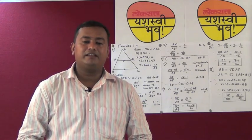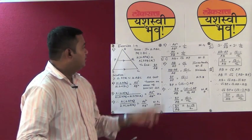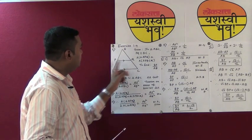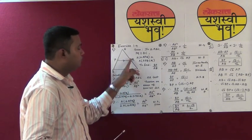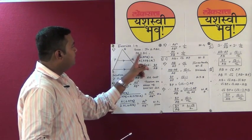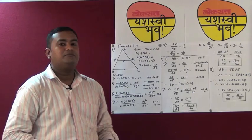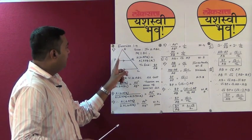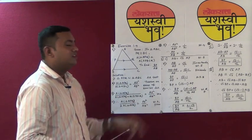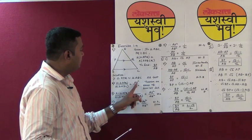We will see one more example where a sum can be solved by various methods. In exercise 1.4, a sum is given: in triangle ABC, PQ is parallel to BC, and the area of triangle APQ is equal to the area of quadrilateral PBCQ; find the value of BP upon AB. Since the two lines are parallel, we have two triangles — the smaller triangle APQ and the bigger triangle ABC. We can prove them similar by the AA test, as they have one common angle and one pair of corresponding angles.